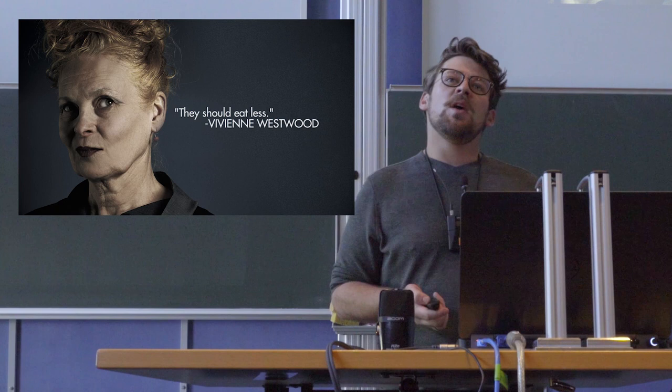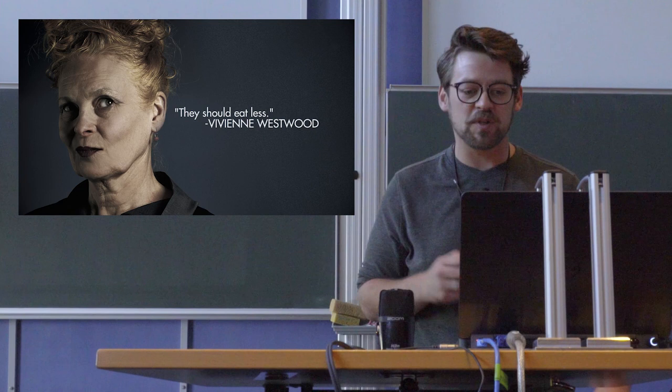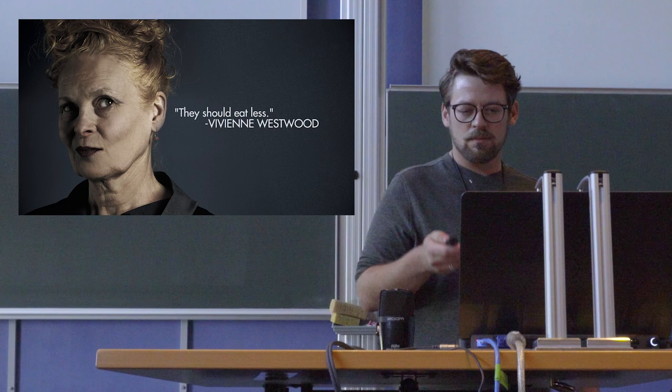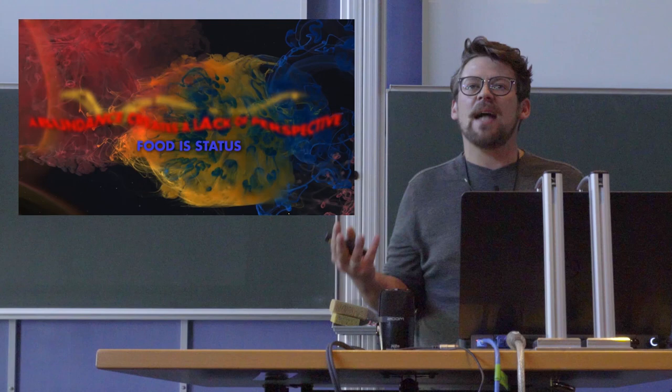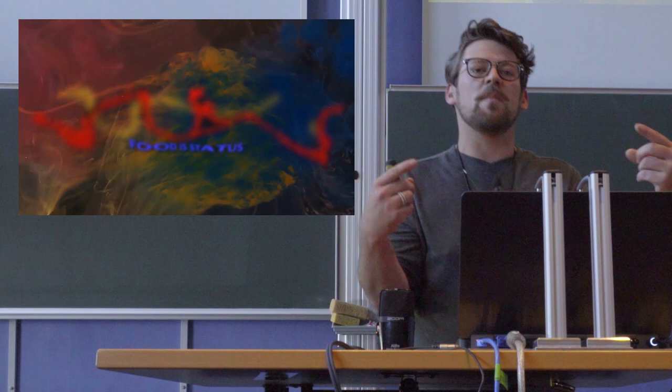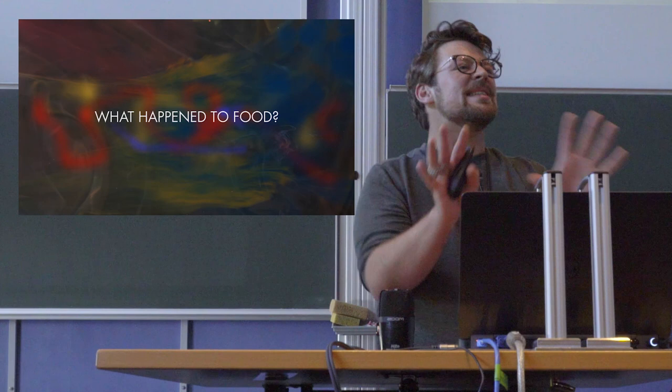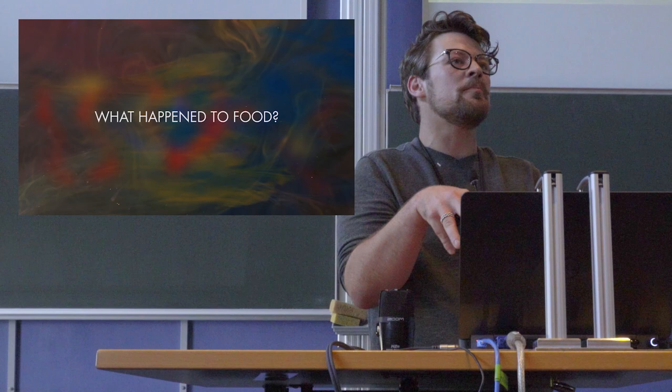So in review, we've got perception requires involvement, which we simply don't have. Abundance creates a lack of perspective that's so deep we can't even really tell we have a lack of perspective. And food is a status symbol. These are the things informing who's coming to food from what angle. And this is what it starts to look like. It gets to be a cloudy disaster. And trying to uncloud this so that we can actually have a discussion about food, that's where most of us get hung up.